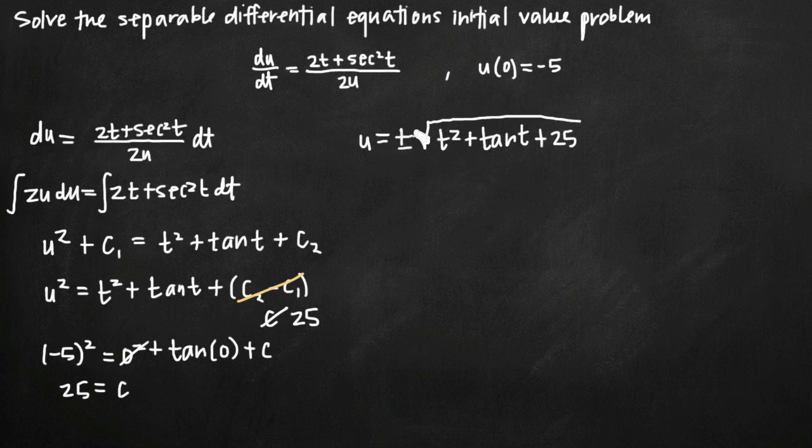So we don't need the ± sign here. We already know it's the negative value we need. Our final answer is u = -√(t² + tan(t) + 25). This is the only equation that truly satisfies the initial condition from the original problem.